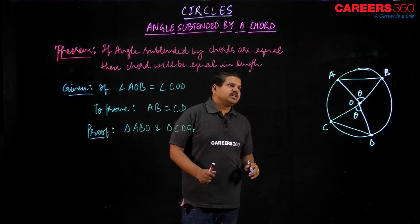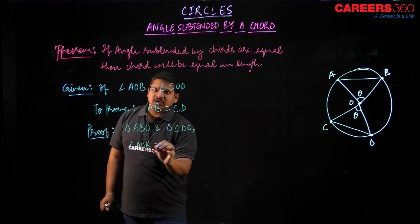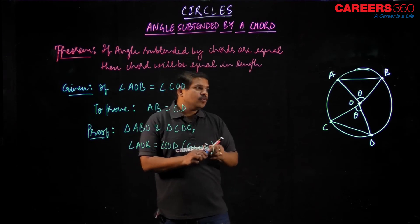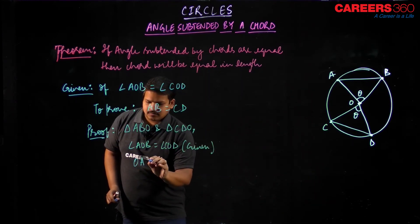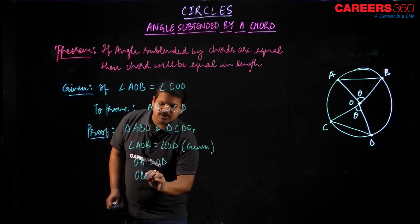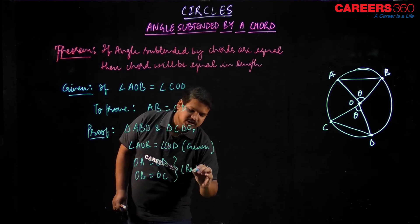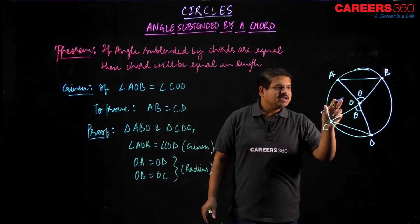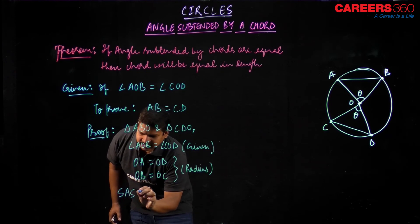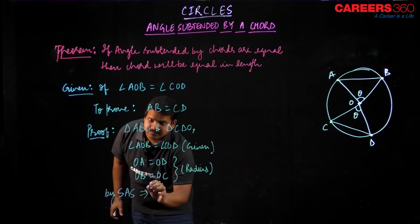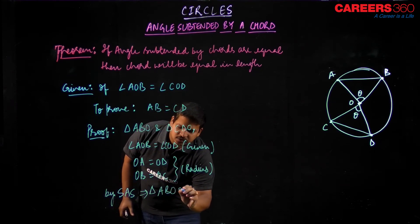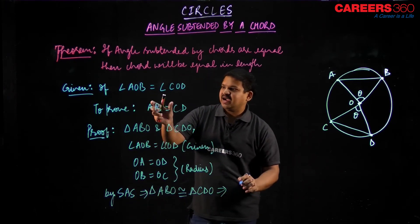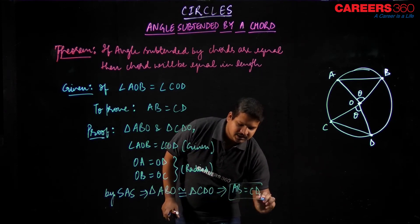In triangle ABO and CDO: angle AOB is equal to angle COD — this is given to me — and OA equals OD and OB equals OC, which are nothing but radii. Since these satisfy Side-Angle-Side, by SAS congruency, triangle ABO is congruent to triangle CDO, and therefore AB is equal to CD.